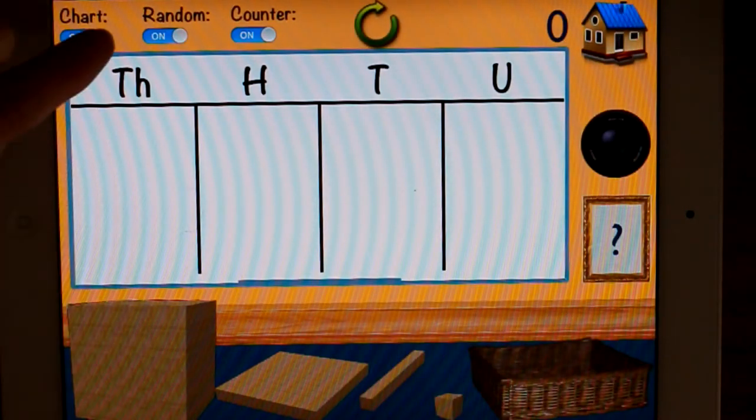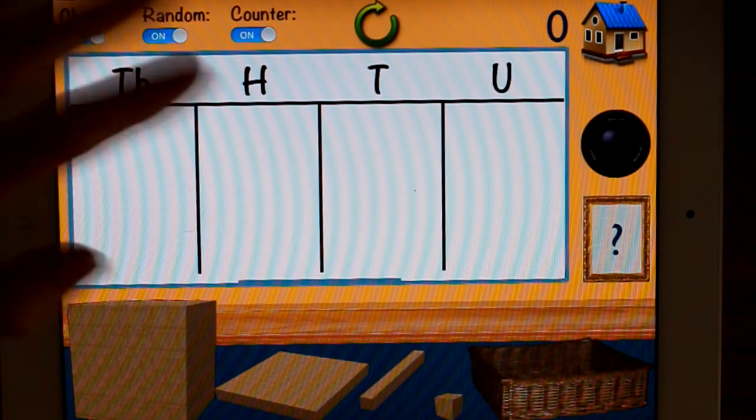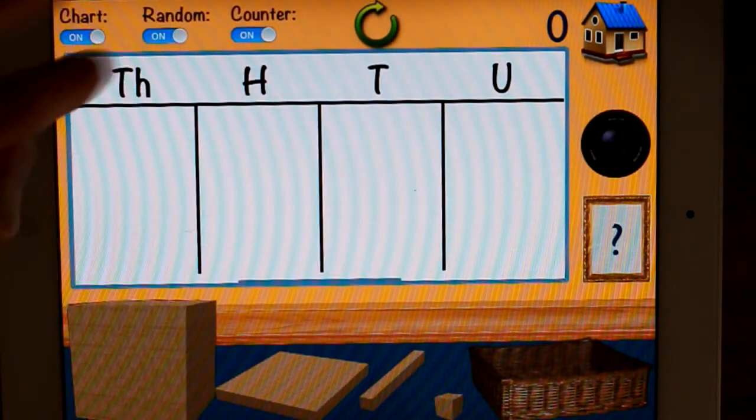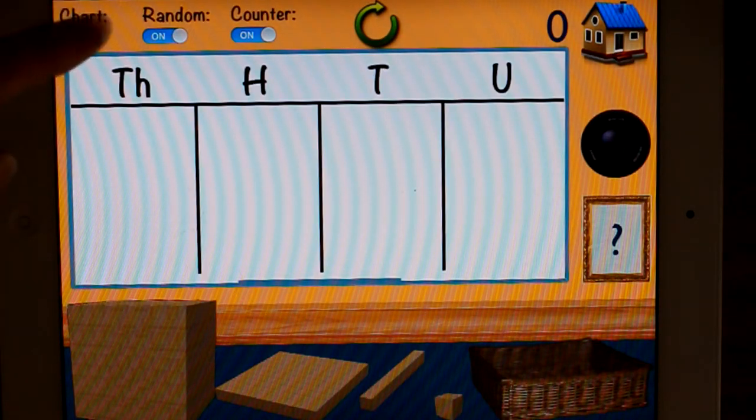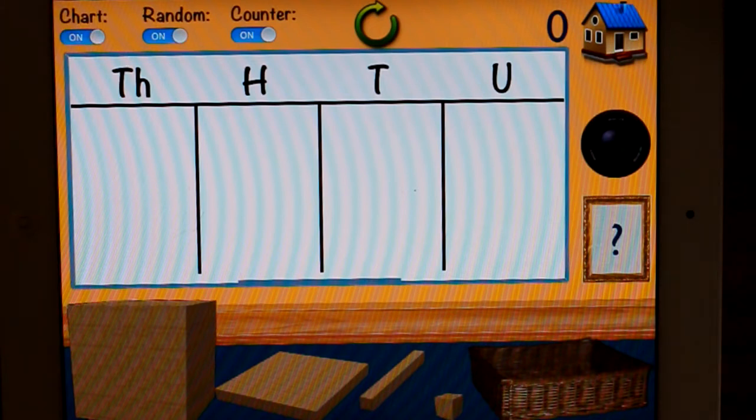You've got your chart off and on for thousands, hundreds, tens and ones. That's useful if you perhaps don't call them thousands, hundreds, tens and units. You might call them ones. I tend to use both words. In Australia, some schools use units, some schools use ones.